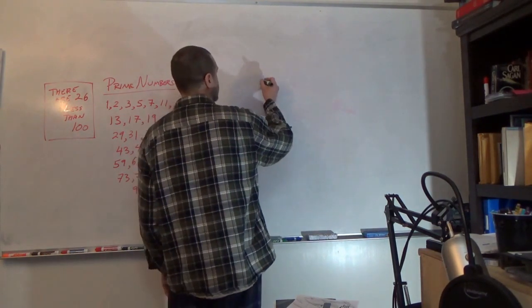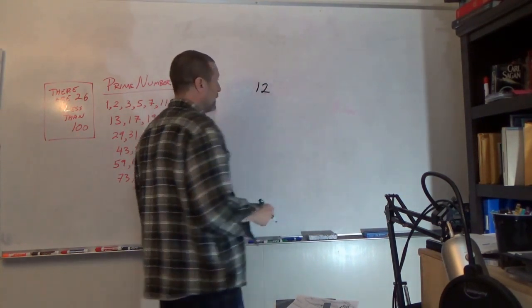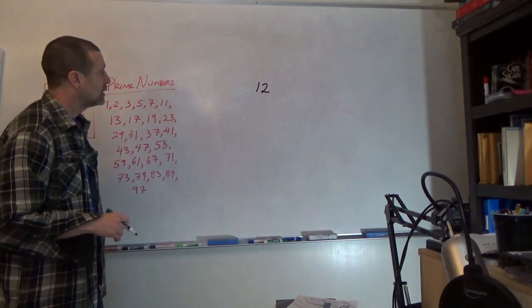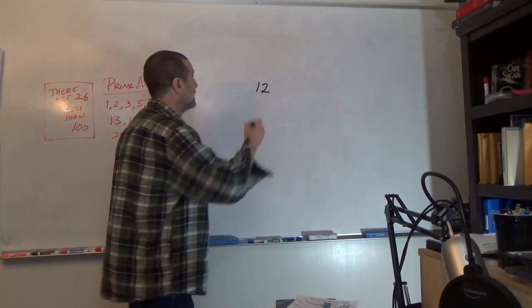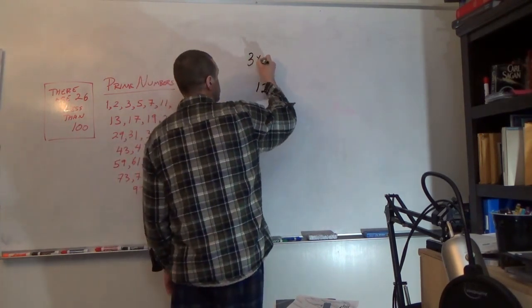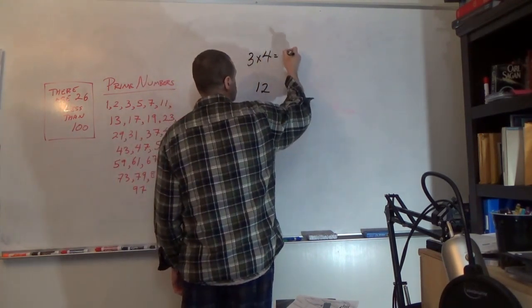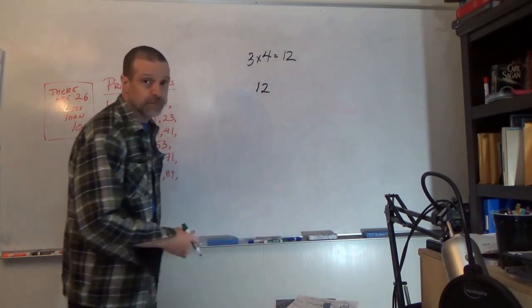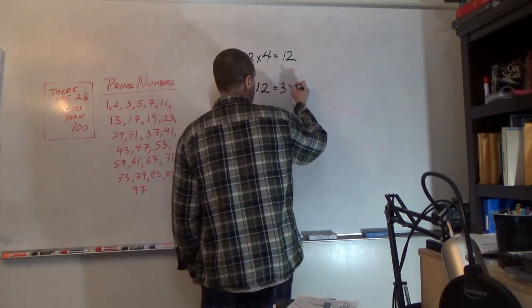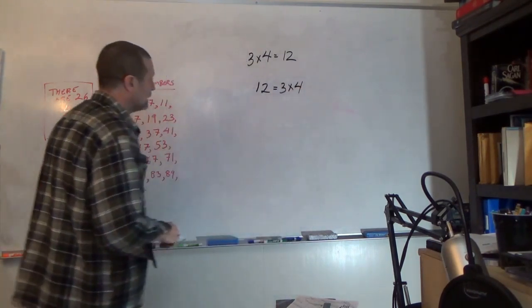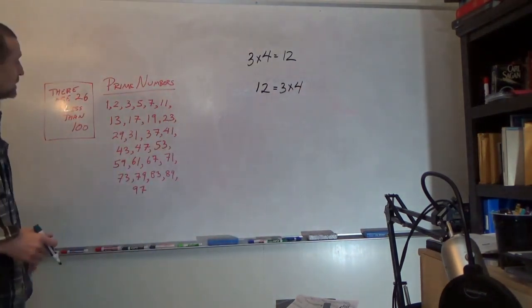Let's take 12. So 12, we know that 3 times 4 is equal to 12. So that's something we know.